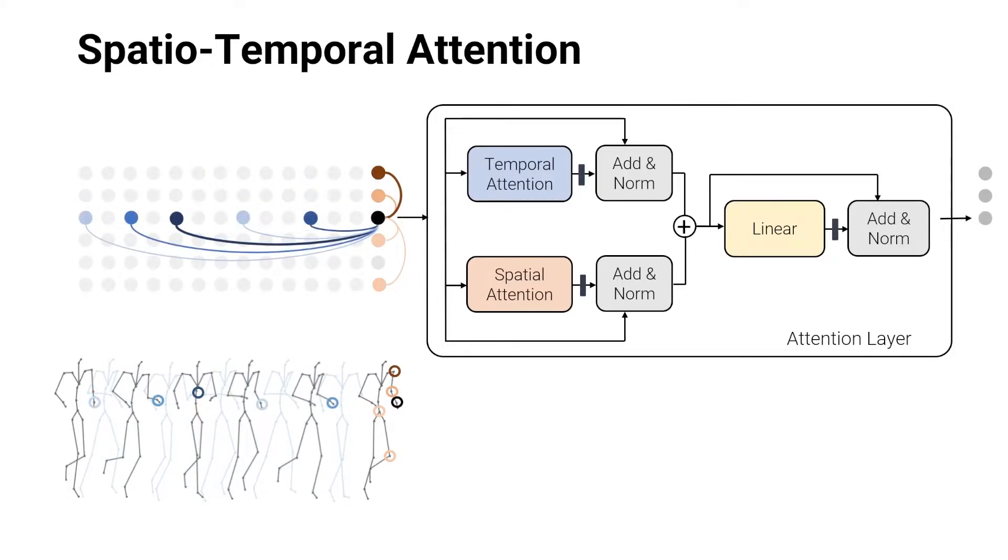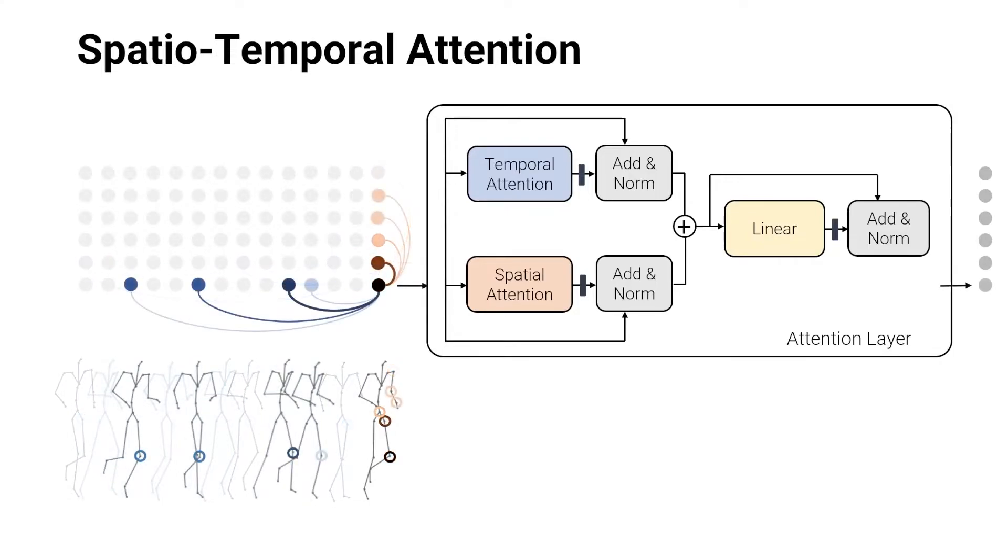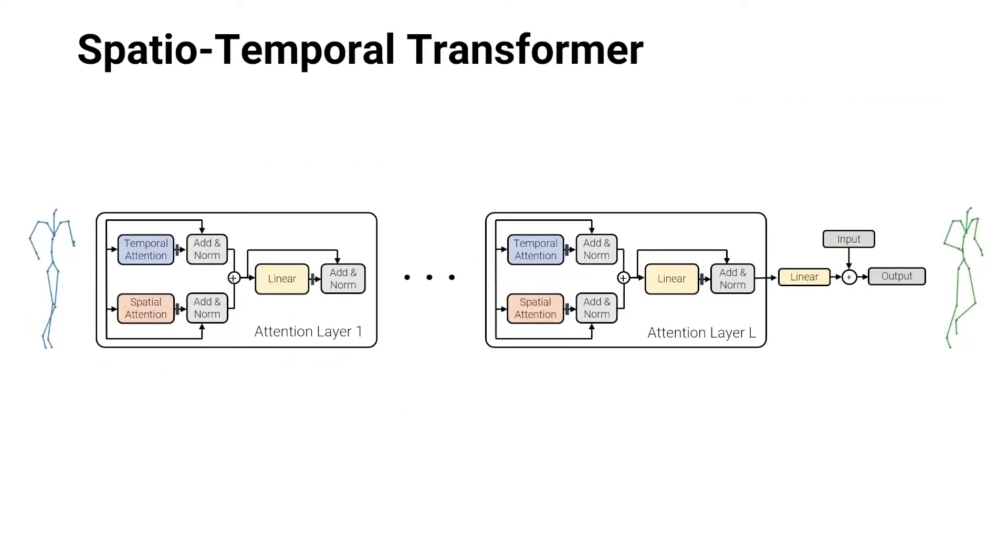This decoupled attention mechanism allows our model to learn spatial-temporal representations for every joint and how to compose a temporally coherent pose. We stack several attention layers to iteratively refine the joint embeddings. Finally, the joint embeddings are projected back into the original joint angle space to form the prediction for the next step.